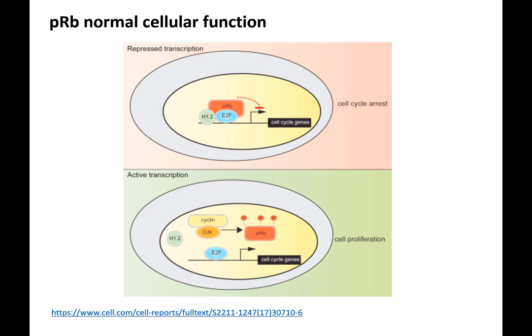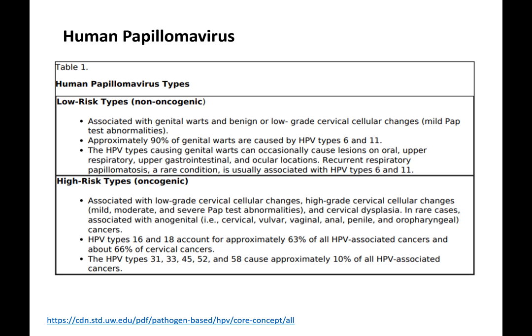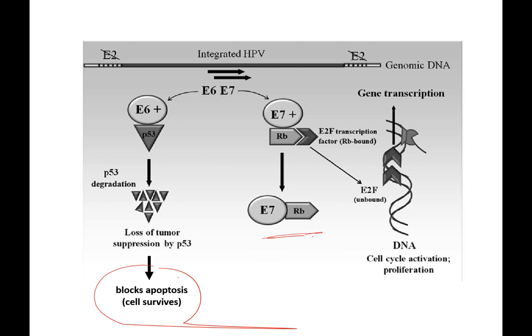Retinoblastoma, RB, is a tumor suppressor important for cell cycle arrest. Normally, when the cell is ready to divide, RB is phosphorylated and releases the transcription factor E2F, enabling cell proliferation. When E7 binds retinoblastoma, E2F is constitutively released and keeps stimulating the cell cycle, leading to gene transcription and cell cycle activation.